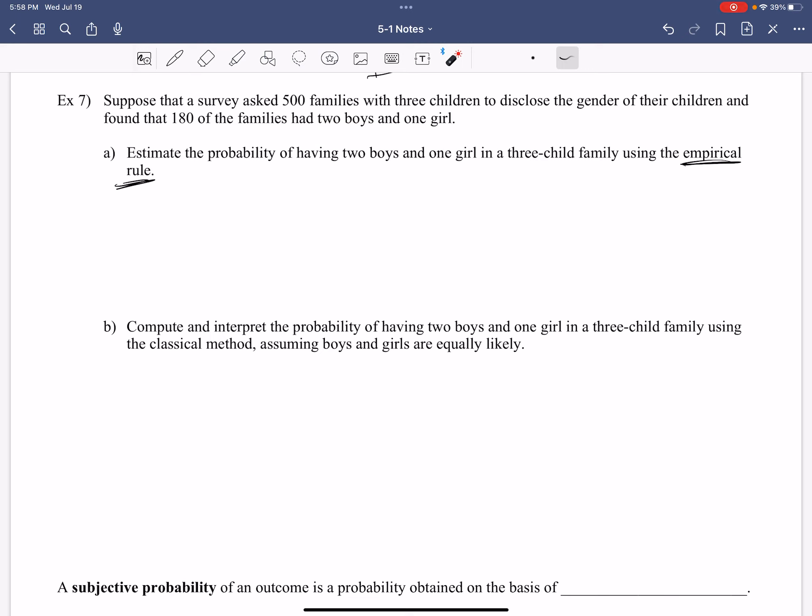So based on this survey, this data given, what is the probability of having two boys and one girl? 180 out of that 500. Good. So the probability of two boys and one girl is 180 out of 500 families which is 0.36. When you plug that into your calculator, empirical rule saying based on the data given, that's the likelihood that we're going to get two boys and a girl.